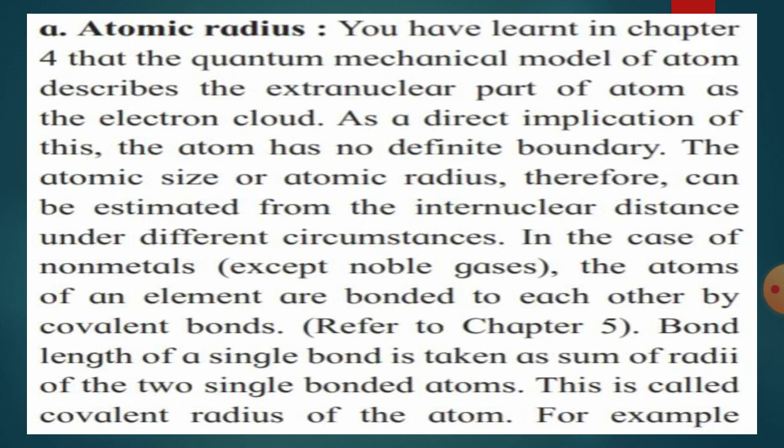We have learnt in chapter number 4 about the quantum mechanical model of an atom, which describes the extra-nuclear part of an atom as the electron cloud. The nucleus contains protons and neutrons, and around the nucleus various shells are present containing electrons depending upon the atomic number. As a direct implication of this, the atom has no definite boundary.